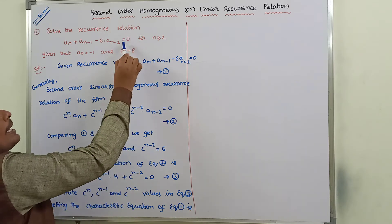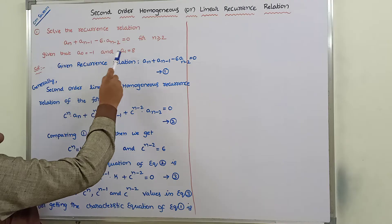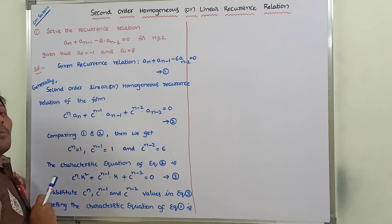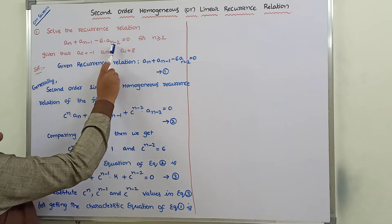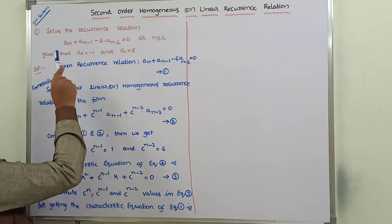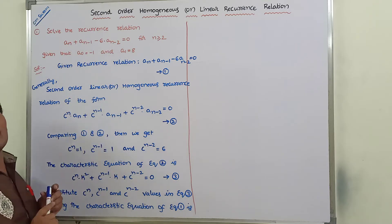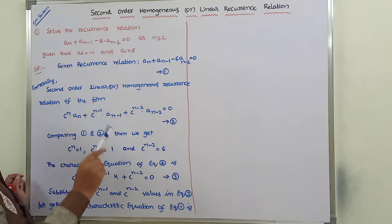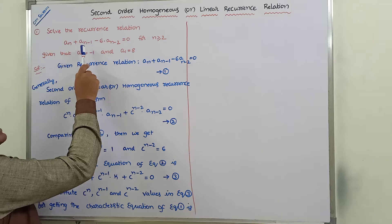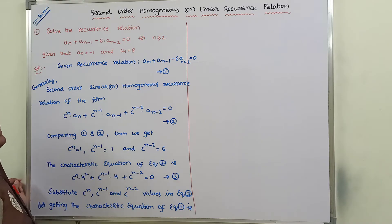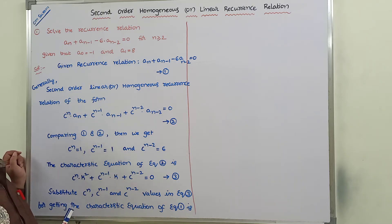Here the right hand side part is equal to 0, hence we can say that this type of recurrence relation is called a homogeneous recurrence relation. Here the nth term, (n-1)th term, and (n-2)th term are present. The nth term can be defined in terms of its two previous immediate terms, that is n-1 and n-2. Hence we can say that it is a second order homogeneous recurrence relation.